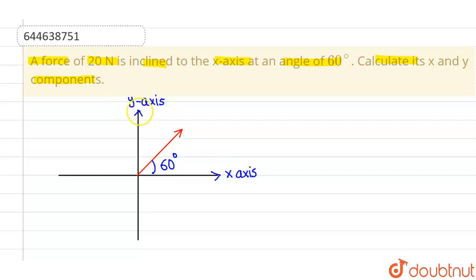And we have to find out the components along x and y-axis. So let me tell you that if the magnitude of this force is f, and if this angle is theta, then normally the component with x-axis is f cos theta.